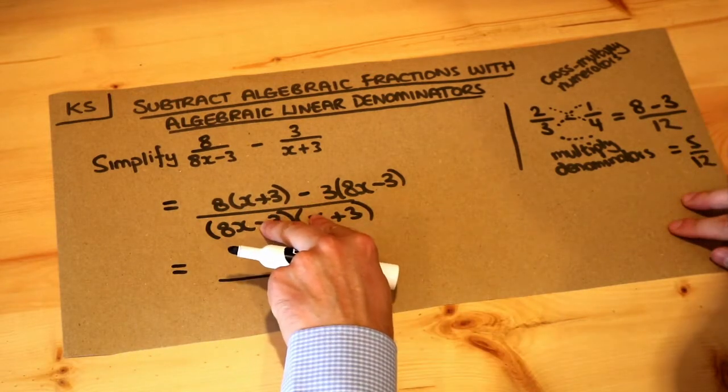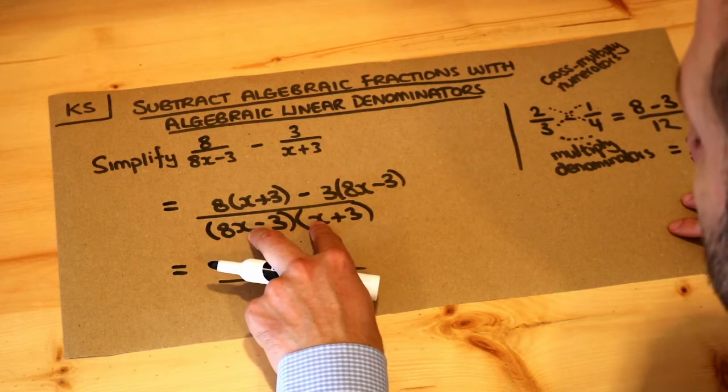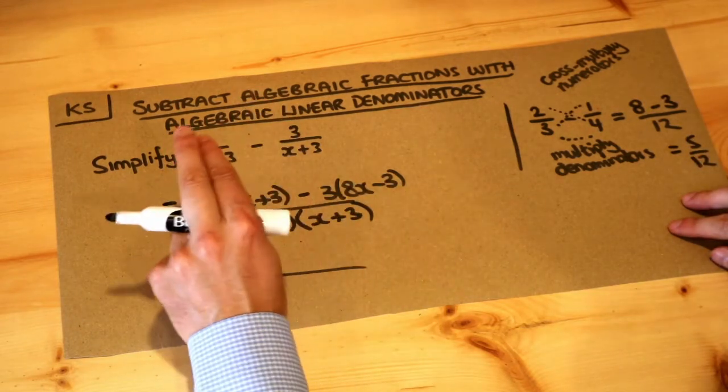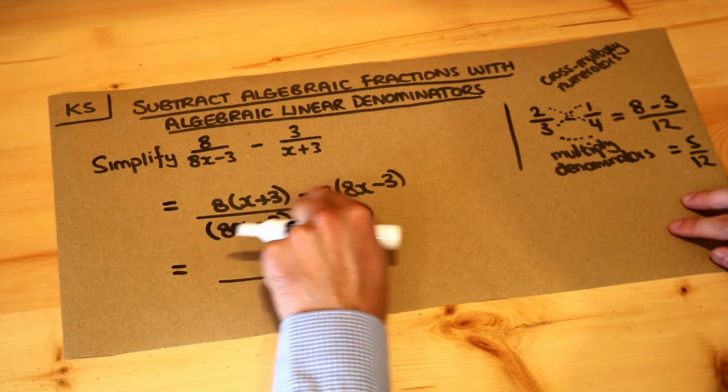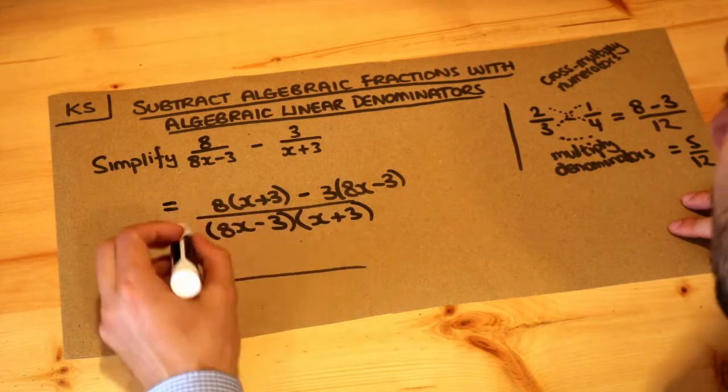Now there's no need to expand out the denominator because it's already factorized. By factorized I mean you've got something times something. But the numerator is not factorized because it's something minus something. It's not factorized because it's not something times something. So we want to expand this out.